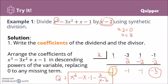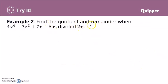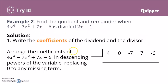Let's have another example. Find the quotient and remainder when 4x⁴ minus 7x² plus 7x minus 6 is divided by 2x minus 1. Note there are missing powers — it goes from degree 4 down to degree 2, so the degree-3 term is missing and we place a 0 there. Also note the divisor has a coefficient of 2 for x. The coefficients of the dividend are: 4, 0, negative 7, 7, and negative 6.